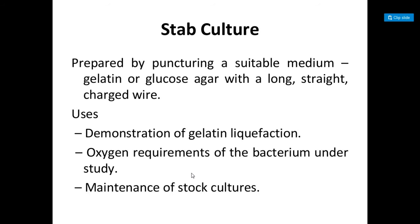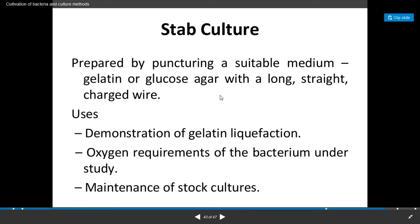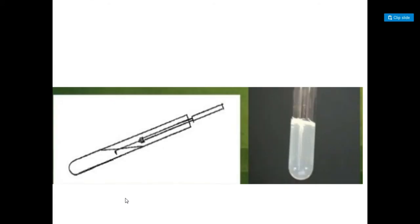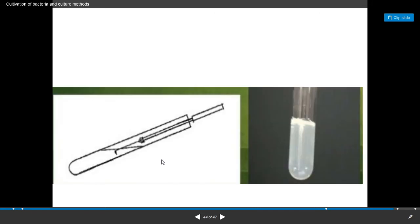The next technique is stab culture. These are prepared by puncturing a suitable medium — for example, gelatin or glucose agar — with a long straight charged nichrome wire. Uses include demonstration of gelatin liquefaction, demonstration of oxygen requirements of the bacterium under study, and these are also useful for the maintenance of stock cultures in the laboratory. In this technique, the nichrome wire is used to directly puncture into the nutrient medium in the test tube, and after incubation the growth appears along the stab line. This is the stab culture.